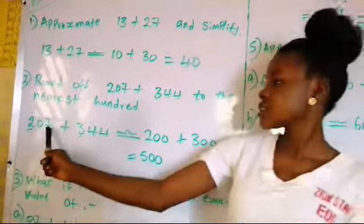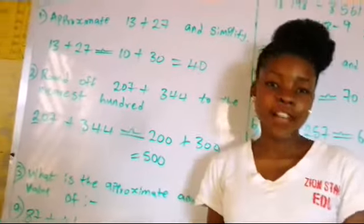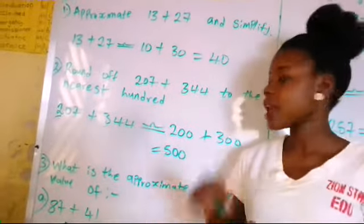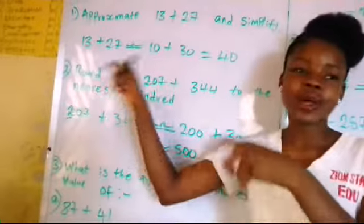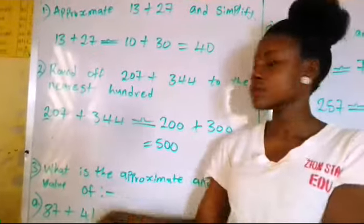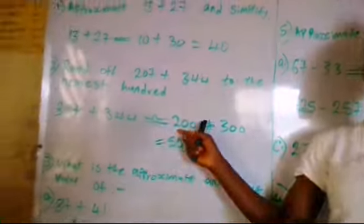So we have 7. 7 is bigger than 5, so approximate it to 1 and put it in the 0. 1 plus 0 is 1, so round the 1 down to 0, leaving us with 2. So that's 200, which is here.